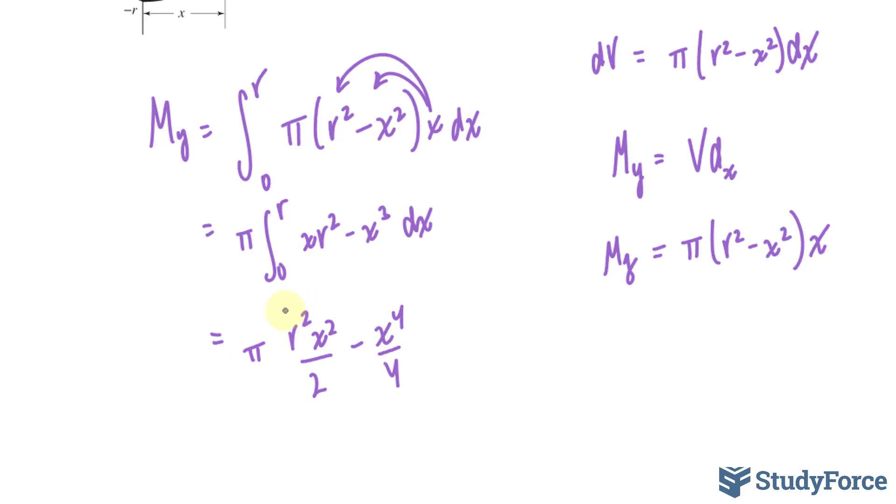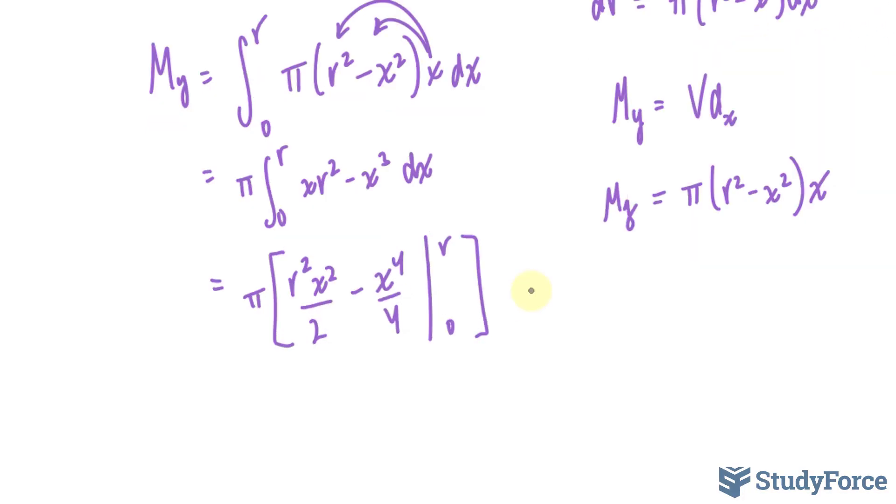And we will find the integral at r and 0. If we substitute r and 0 into here, we'll end up with the following expression where we have pi r to the power of 4 over 4.